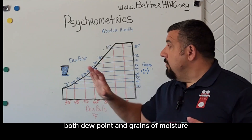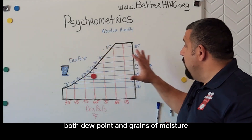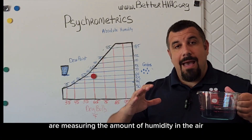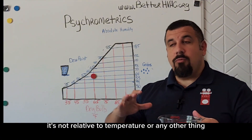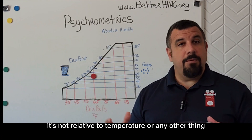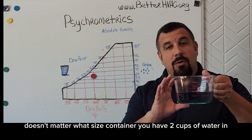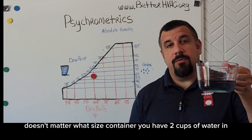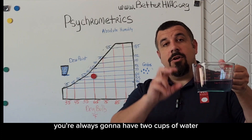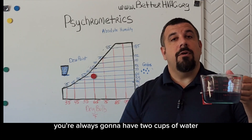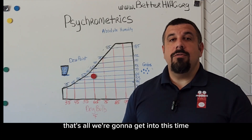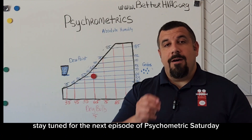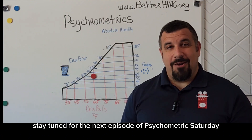Both dew point and grains of moisture are measuring the amount of humidity in the air — it's not relative to temperature or any other thing. It doesn't matter what size container you have two cups of water in; you're always going to have two cups of water. That's all we're going to get into this time. Stay tuned for the next episode of Psychometric Saturday.